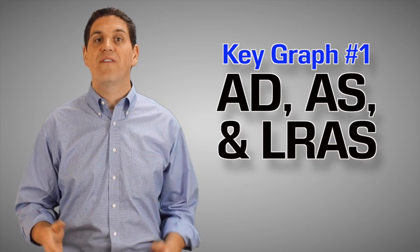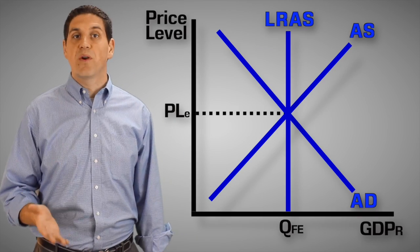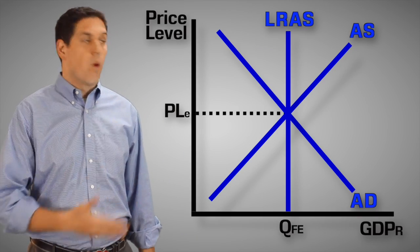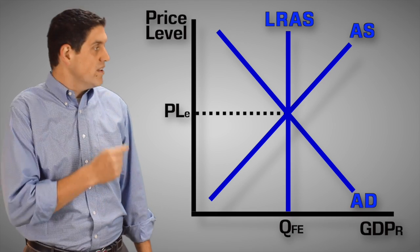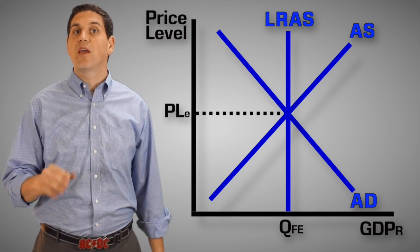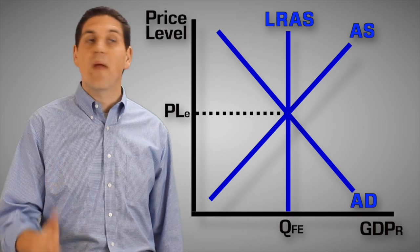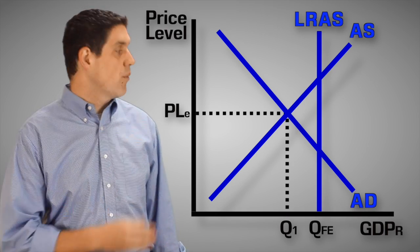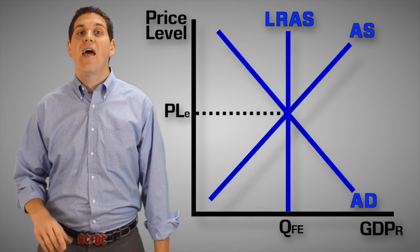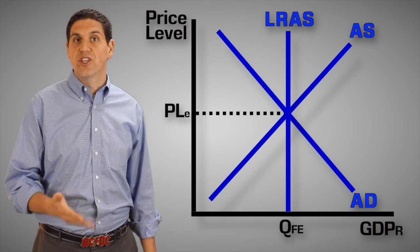The first and most important graph is aggregate demand and aggregate supply. The concept is pretty simple. The vertical line represents full employment, where we want to be in our economy with four to six percent unemployment. This graph shows that the economy can only be in one of three places at any given period of time: it can either be at full employment, it can have a recession, or it can have an inflationary gap. And that's what they'll ask you in a free response — to draw one of those three situations.